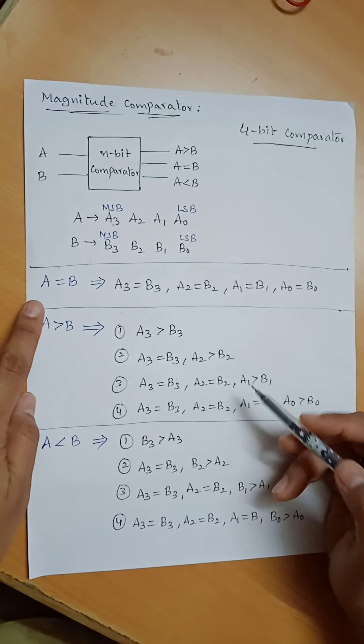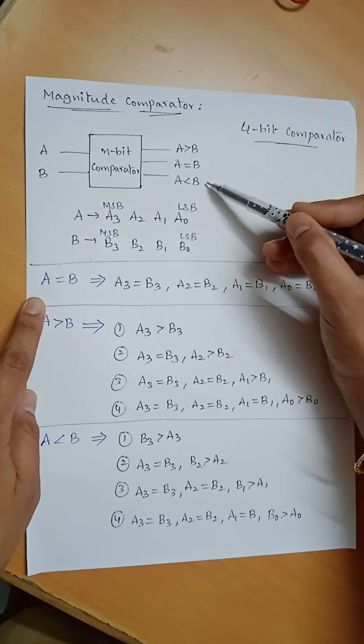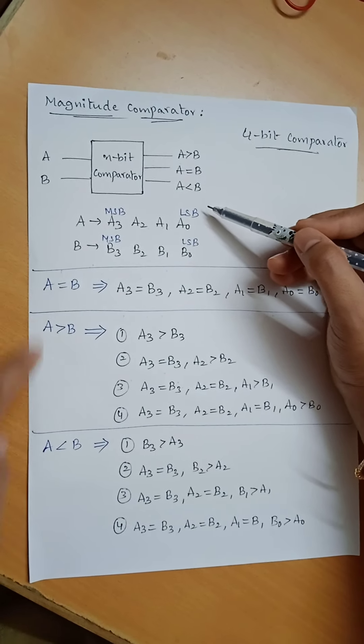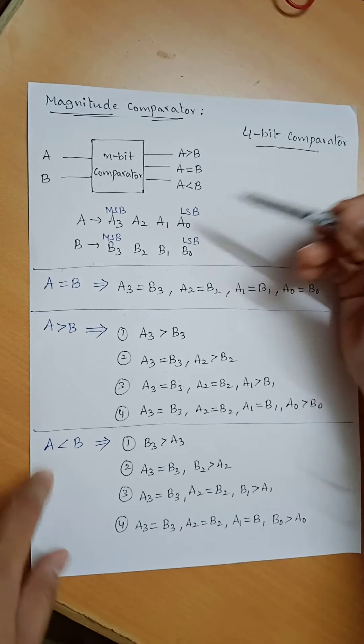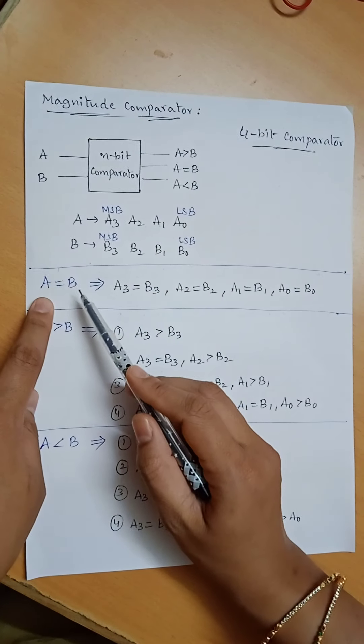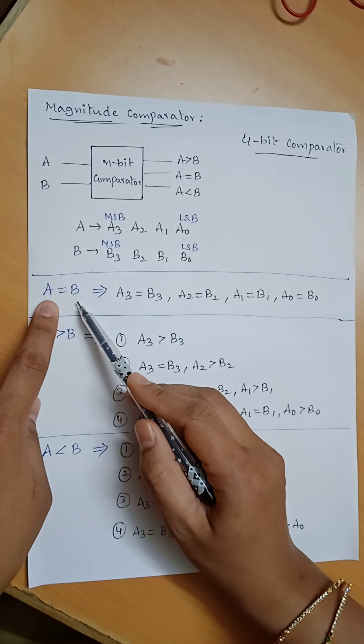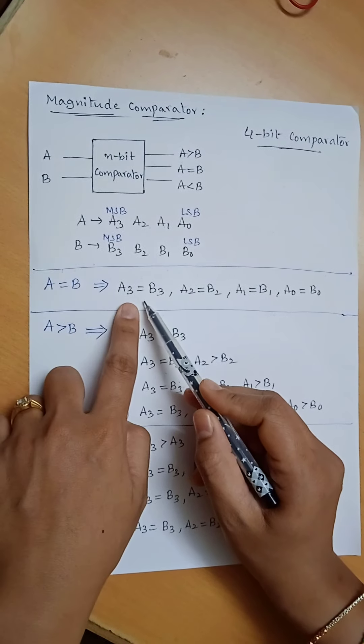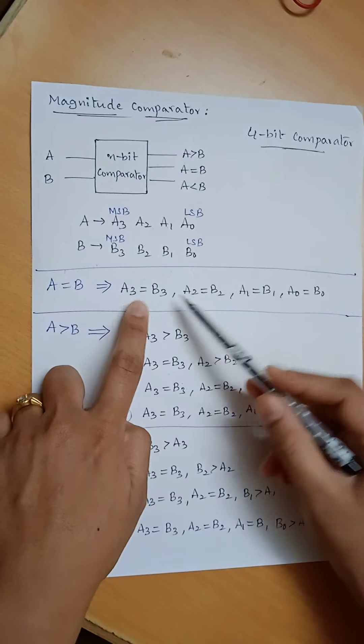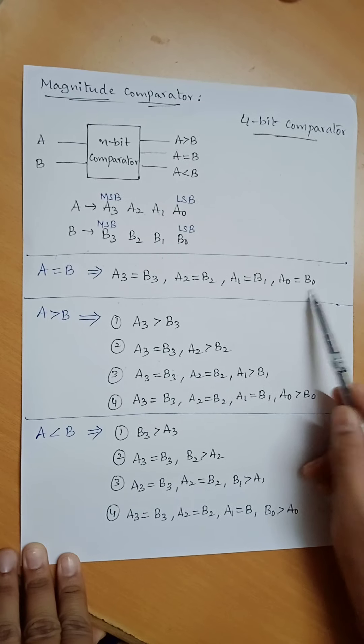In order to have any one of the outputs, we should know the logic behind it. If A equal to B is the output, it means A3 equal to B3, A2 equal to B2, A1 equal to B1, and A0 equal to B0.